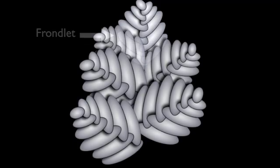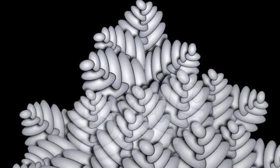What we do know is that they're made up of these small units called frondlets. These frondlets repeat themselves over and over in a fractal pattern, meaning that each branch branches, and each one of those branches branches, and each one of those branches branches for three or four orders of magnitude.